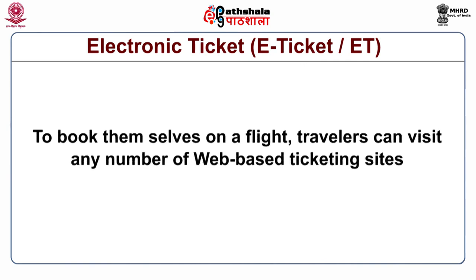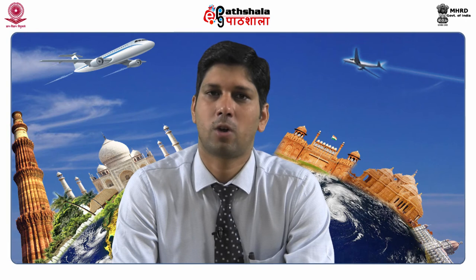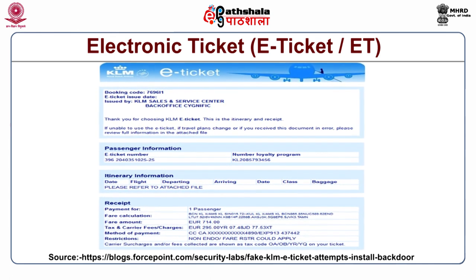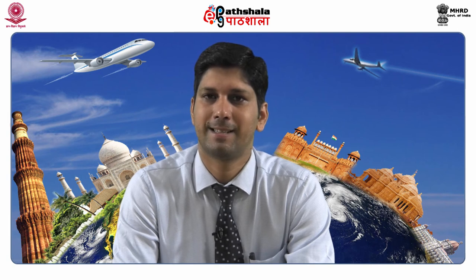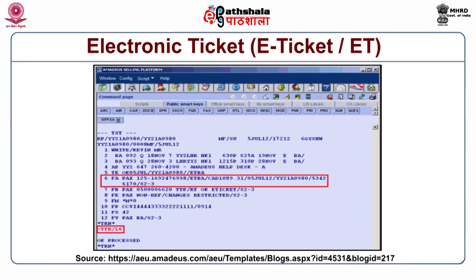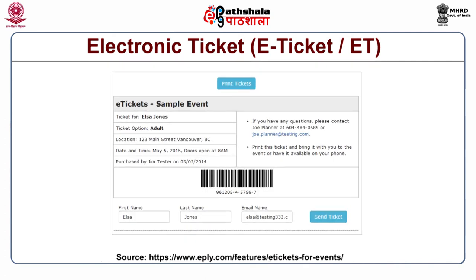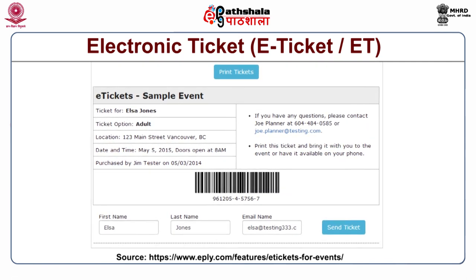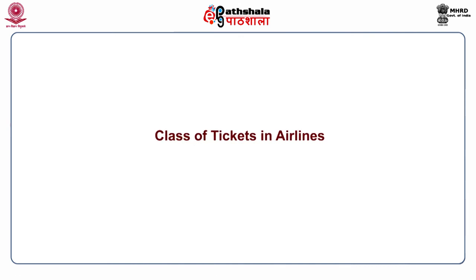To book themselves on a flight, travelers can visit any number of web-based ticketing sites, view available options, and use a credit or debit card to pay. After placing the order, the electronic record goes into the airline's database. The electronic ticket is particularly convenient since it confirms the purchase without any printed document, and the airline stores all ticket details in its central reservation system — meaning the passenger has no need to show a printed ticket and no worry about forgetting or losing it. Having an electronic ticket allows going directly to the check-in counter with a passport or identity card and a copy of the booking confirmation email.